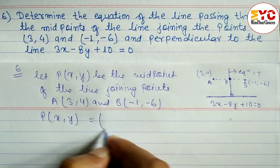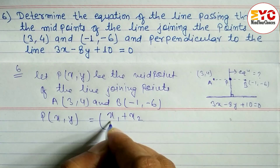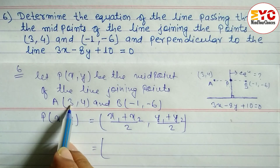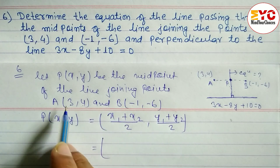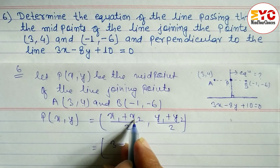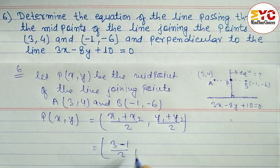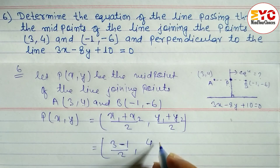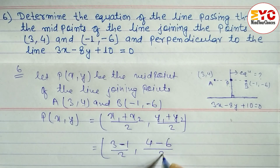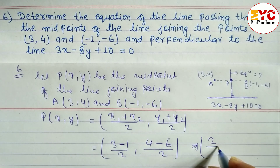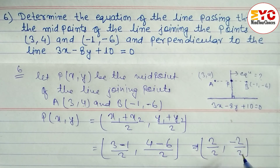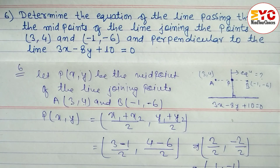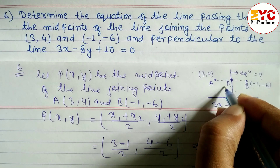P(x, y) equals the midpoint formula: (x1 + x2)/2, (y1 + y2)/2. Here x1 = 3, x2 = -1, y1 = 4, y2 = -6. So x = (3 + (-1))/2 = 2/2 = 1, and y = (4 + (-6))/2 = -2/2 = -1. So the midpoint P equals (1, -1).